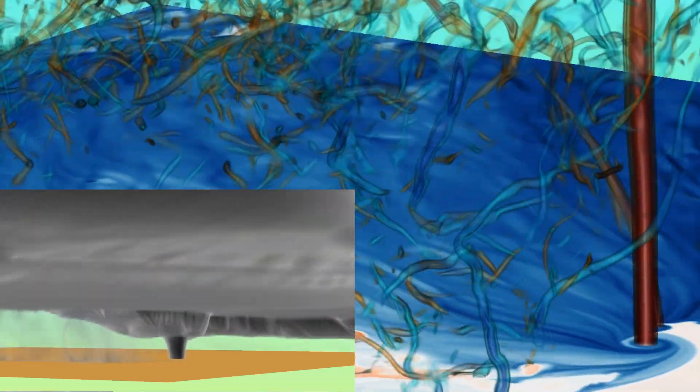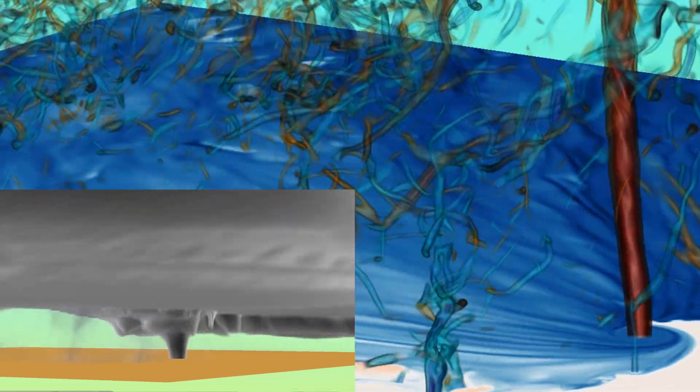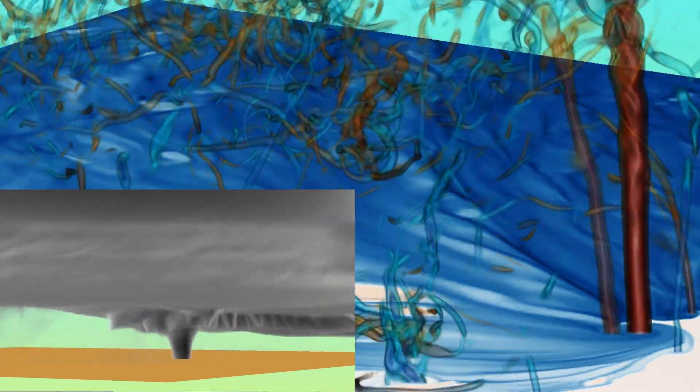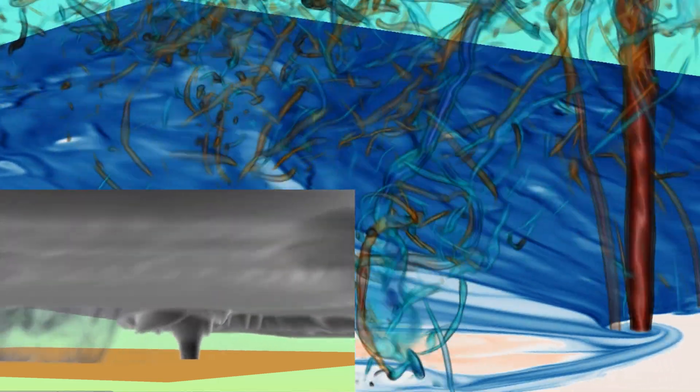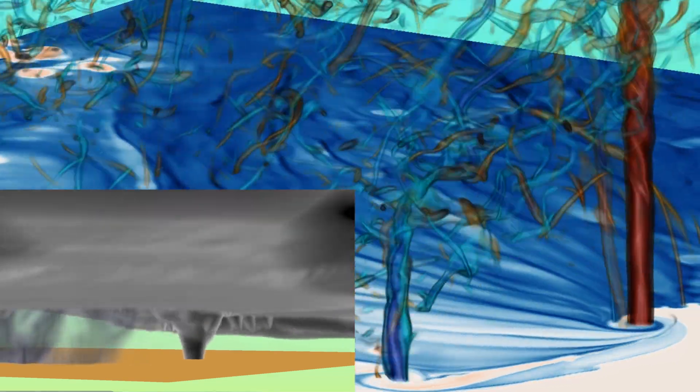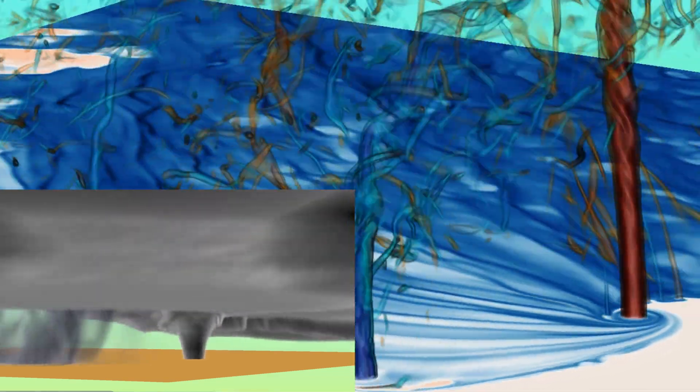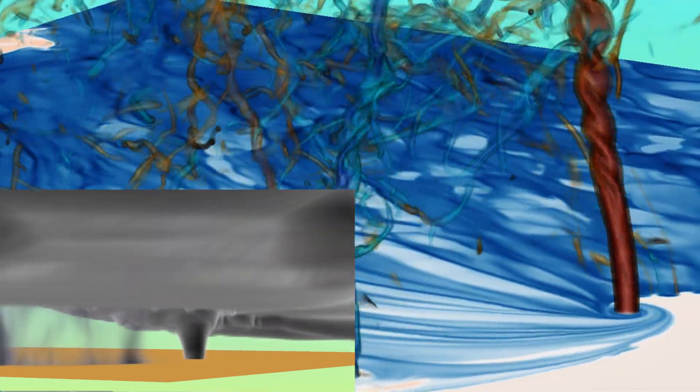As the tornado strengthens, it undergoes a process called vortex breakdown, which is evident in the vorticity field where the tornado breaks into two tightly coupled vortices as it descends from the ground. This process has been seen in both laboratory and numerical models of tornadoes.